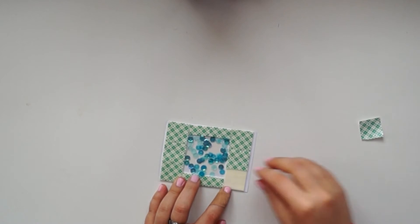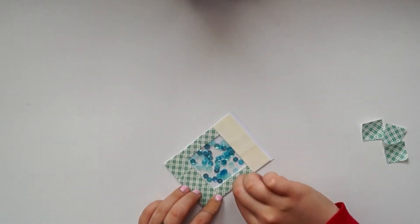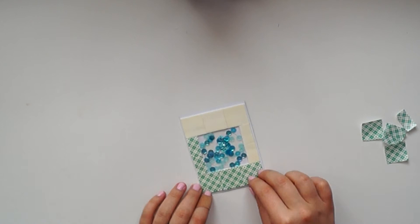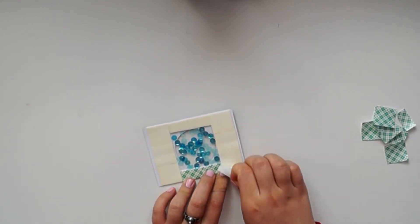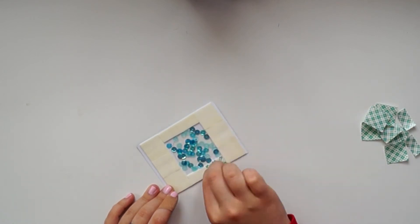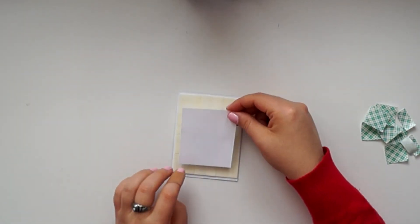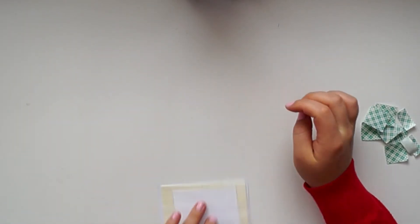Once we have all the sequins in here that we want to be seen, we're just going to peel off all the backing of our foam adhesive so that we can place the backing of the shaker on the card. We're placing the small backing that covers the hole of the shaker.